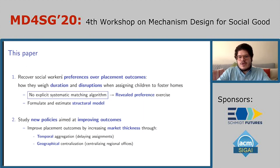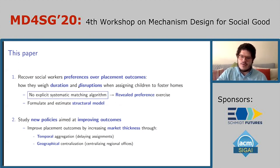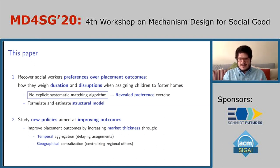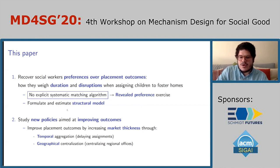I write the preferences over what I call placement outcomes. In the model, social workers care about how long children stay in a foster home — the duration of a placement — and whether children need to be switched at the end of a placement to another foster home, or whether placements last until children exit the system. I design and estimate a structural model with data from LA, and then once I've estimated the parameters, I study new policies aimed at minimizing the number of disruptions children experience in foster care.